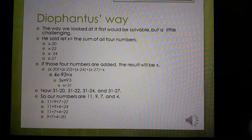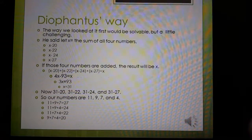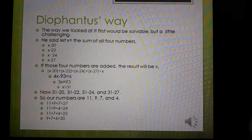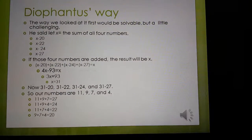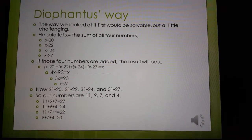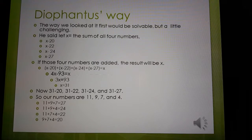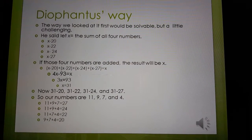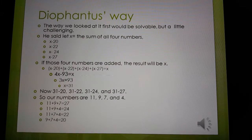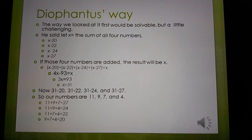And if you solve that, 4x minus 93 equals x, and you get x equals 31. Now you plug 31 back in. So 31 minus 20, 31 minus 22, 31 minus 24, and 31 minus 27. And we get 11, 9, 7, and 4.